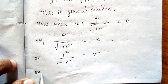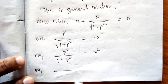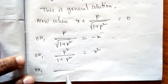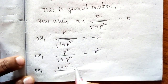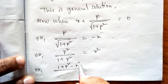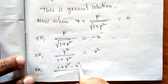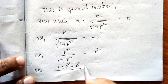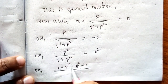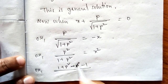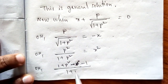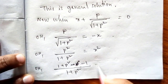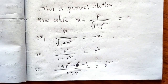Squaring both sides: p² / (1 + p²) = x², or (1 + p² − 1) / (1 + p²) = x², which simplifies to 1 − [1 / (1 + p²)] = x².